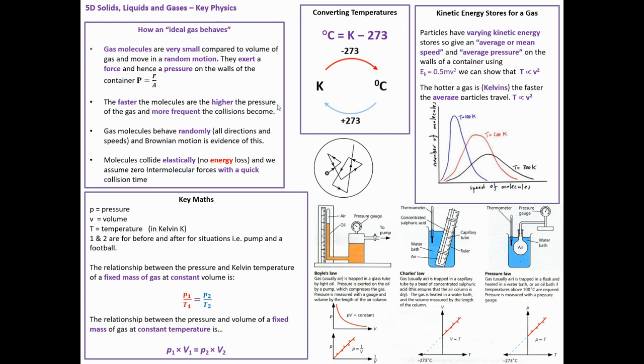The faster the molecules are, the higher the pressure of the gas and the more frequent the collisions become. Gas molecules behave randomly in all directions and speeds, and Brownian motion is evidence of it. You can see a picture there of a molecule that's been moved about, buffeted—it's smoke buffeted by these invisible molecules of gas. We know some of this from the motion of these particles. You can look under a microscope and see smoke particles doing that.